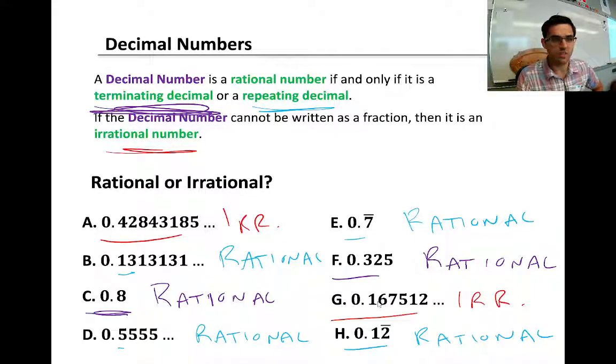Now A and G, they are not terminating and they are not repeating decimals. So A and G would be examples of irrational numbers.